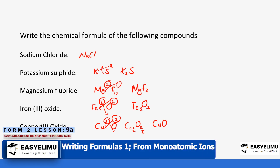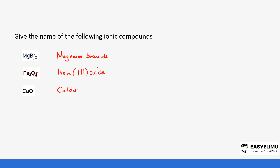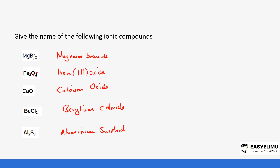Naming compounds: MgBr2 - magnesium stays as written and bromine becomes bromide, so it is magnesium bromide. Fe2O3 - it becomes iron(III) oxide. CaO becomes calcium oxide. BeCl2 becomes beryllium chloride. Al2S3 becomes aluminium sulfide.